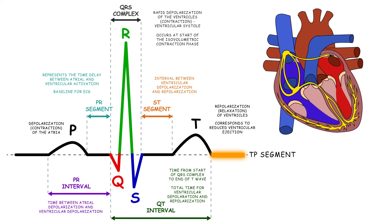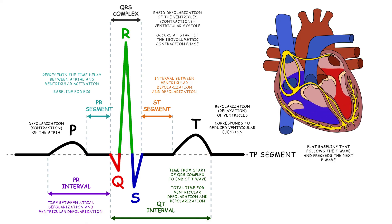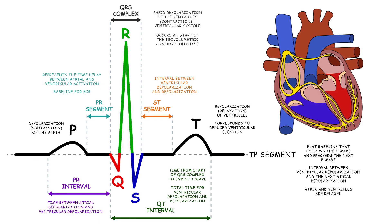Finally, the TP segment is the flat baseline that follows the T wave and precedes the next P wave. It represents the interval between ventricular repolarization and the next atrial depolarization. During this phase, both the atria and ventricles are relaxed.